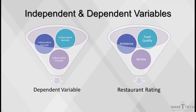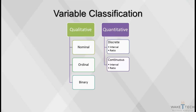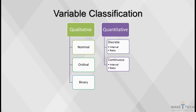Restaurant ratings are a function of food quality, ambiance, and service. Variables can be qualitative or quantitative. Qualitative data can be nominal, ordinal, or binary. Quantitative data can be discrete or continuous, with either an interval or ratio level of measurement.